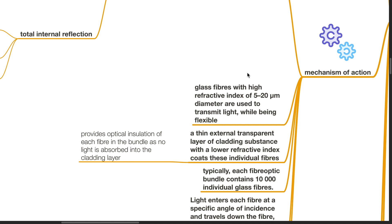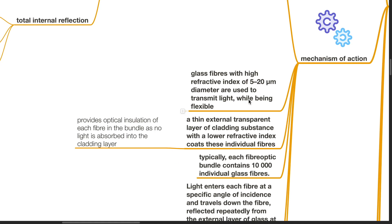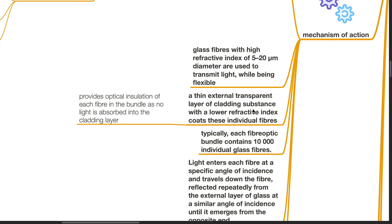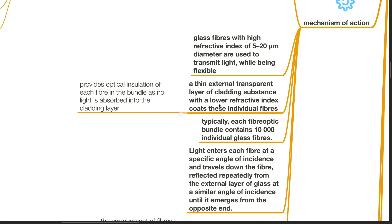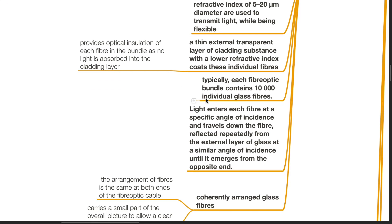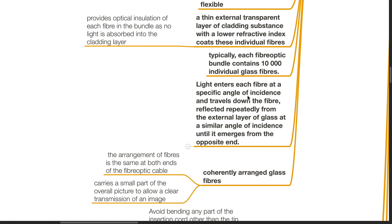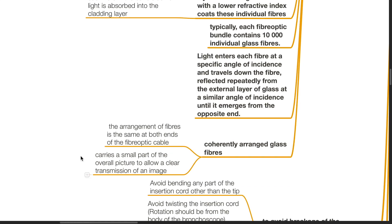Glass fibers with high refractive index of 5 to 20 microns diameter are used to transmit light while being flexible. A thin external transparent layer of cladding substance with a lower refractive index coats these individual fibers and provides optical insulation of each fiber in the bundle, as no light is absorbed into the cladding layer. Typically each fiber optic bundle contains 10,000 individual glass fibers. Light enters each fiber at a specific angle of incidence and travels down the fiber, reflected repeatedly from the external layer at a similar angle until it emerges from the opposite end. The glass fibers are arranged coherently — the arrangement is the same at both ends — each carrying a small part of the overall picture to allow clear transmission of an image.